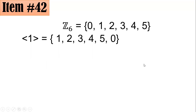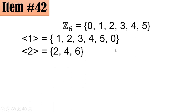For element 1: 1, then 1 plus 1 is 2, then 3, then 4, then 5 plus 1 is 6, and 6 divided by 6 gives remainder 0, so we stop. For element 2: starting with 2, then 2 plus 2 is 4, then 4 plus 2 is 6, and 6 divided by 6 gives 0, so stop. For element 3: starting with 3, then 3 plus 3 is 6, and 6 divided by 6 gives remainder 0, so stop.